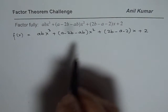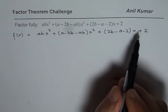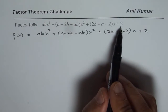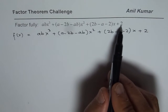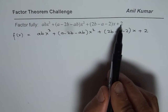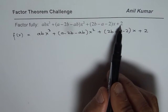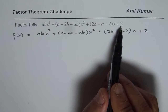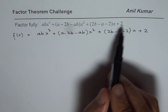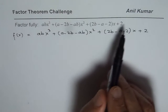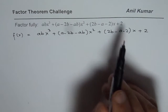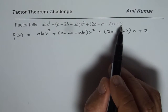To factor this, let us try factoring using the factors of 2, which are ±1 and ±2. Let us not get into the complications of dividing by a's and b's, but we can definitely try ±1 and ±2.